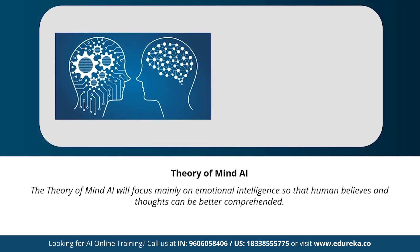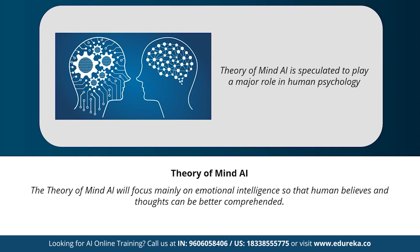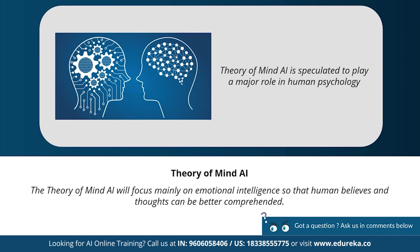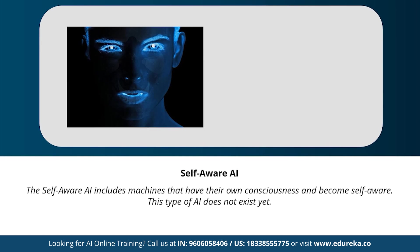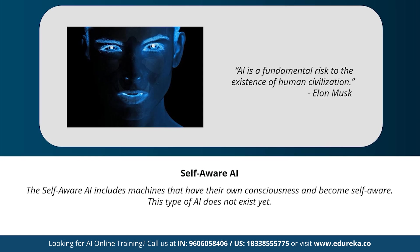Next is theory of mind AI, a more advanced type speculated to play an important role in psychology. This type will mainly focus on emotional intelligence so that human beliefs and thoughts can be better comprehended. It has not been fully developed yet, but rigorous research is ongoing. Our last type is self-aware artificial intelligence — machines that have their own consciousness and become self-aware. This type is far-fetched, but achieving a stage of super intelligence may be possible in the future. Geniuses like Elon Musk and Stephen Hawking have constantly warned us about the evolution of AI.